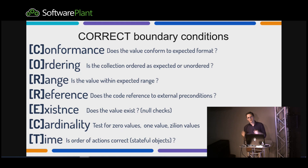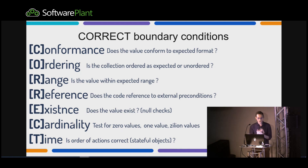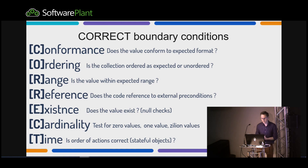For example, if I'm relying on system time, what will happen if I change it? Existence: does the value I'm passing to the method exist? Maybe if not, I should raise an exception. Cardinality: if you're passing a collection into a method, check if it's empty, has one value, or zillion values. Time: check the order of actions — for example, if I have an issue and change its status to in-progress then to closed, that's fine. But what if I have a closed issue and try to change it to in-progress? I should check these reordered state transitions and be aware of all boundary conditions.